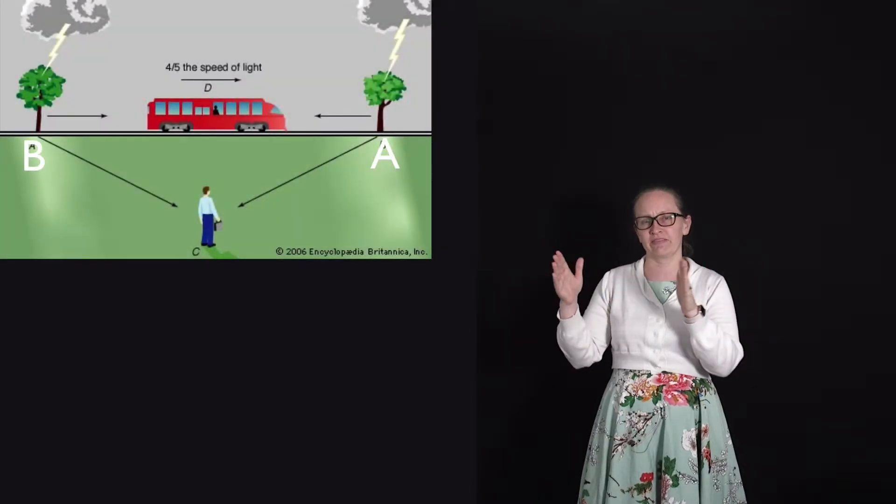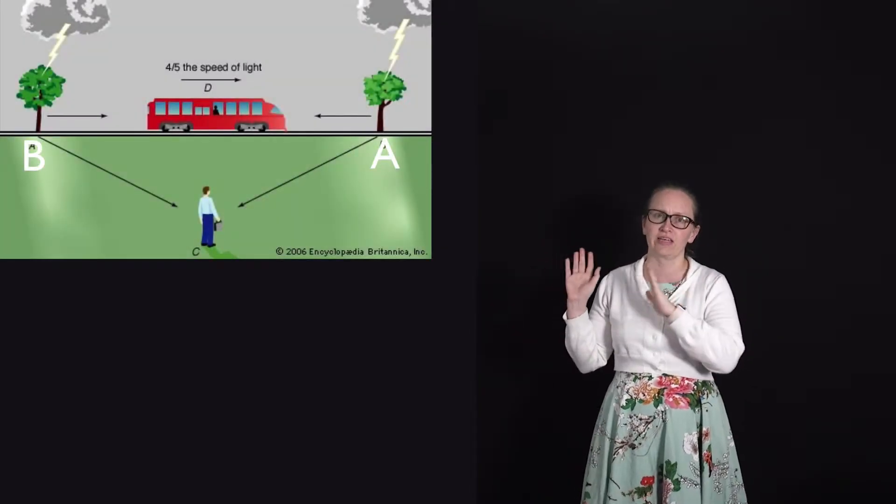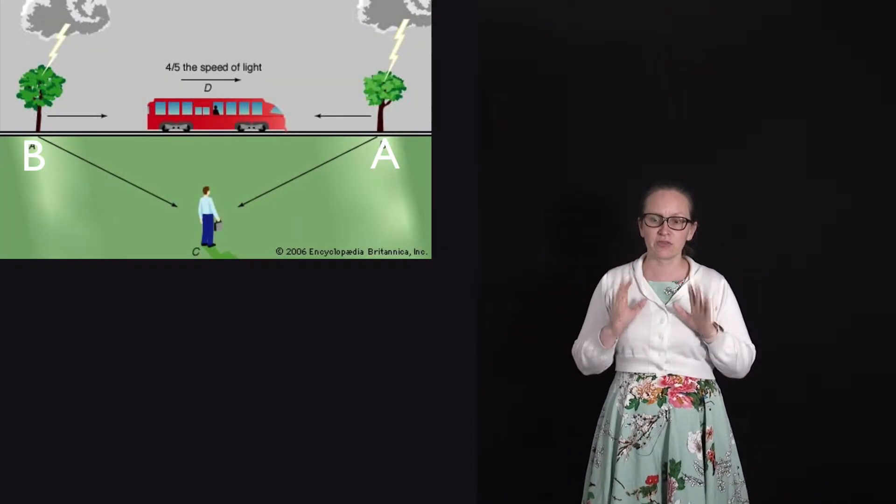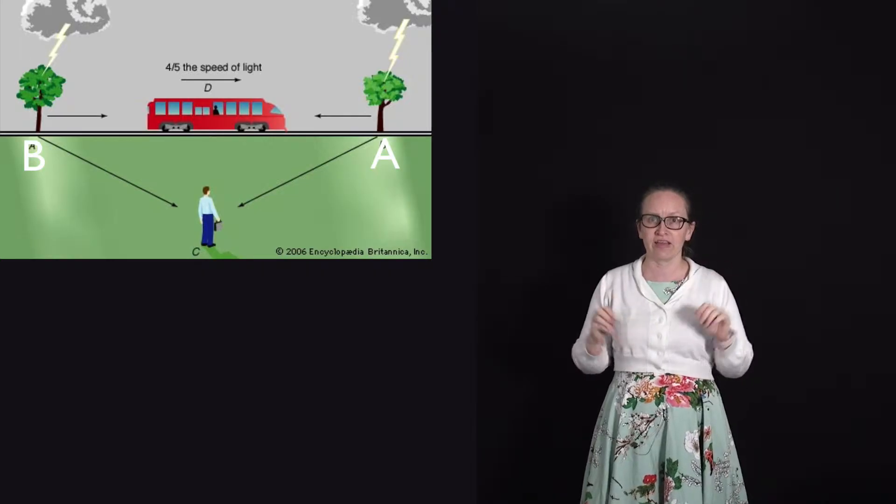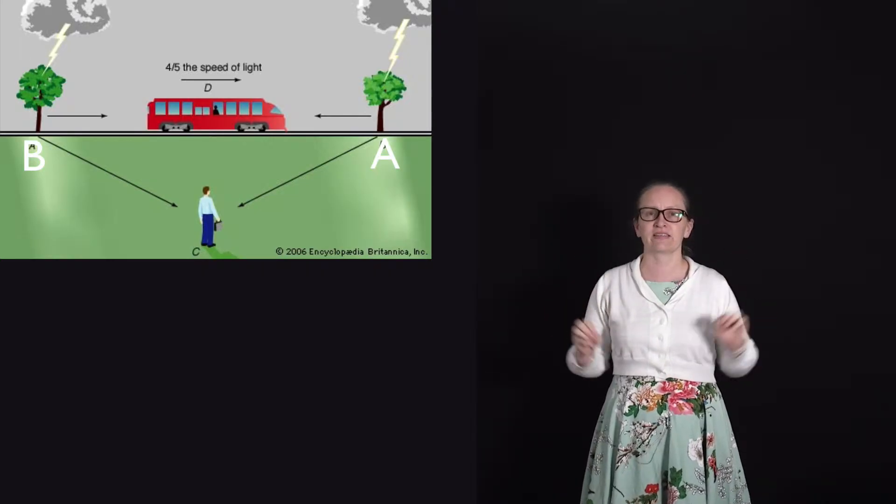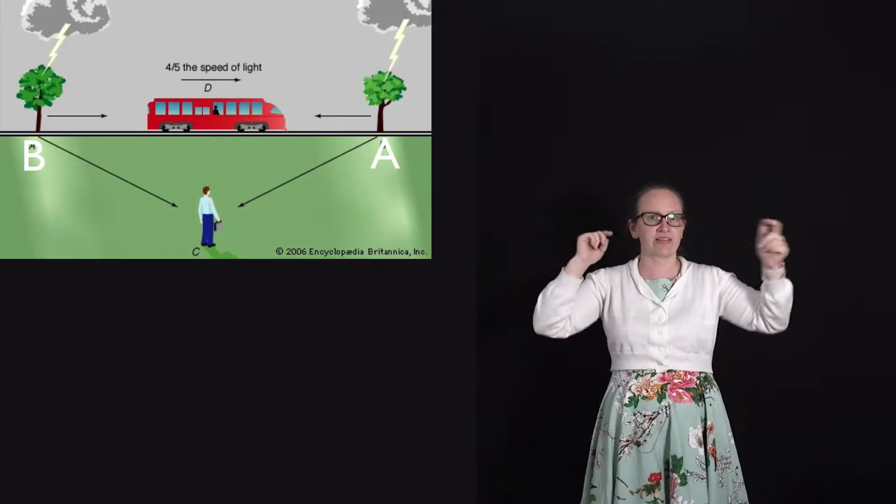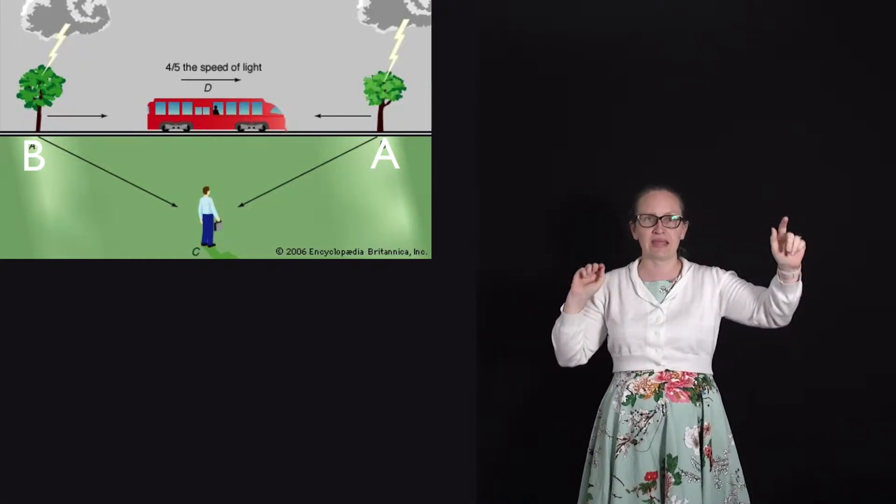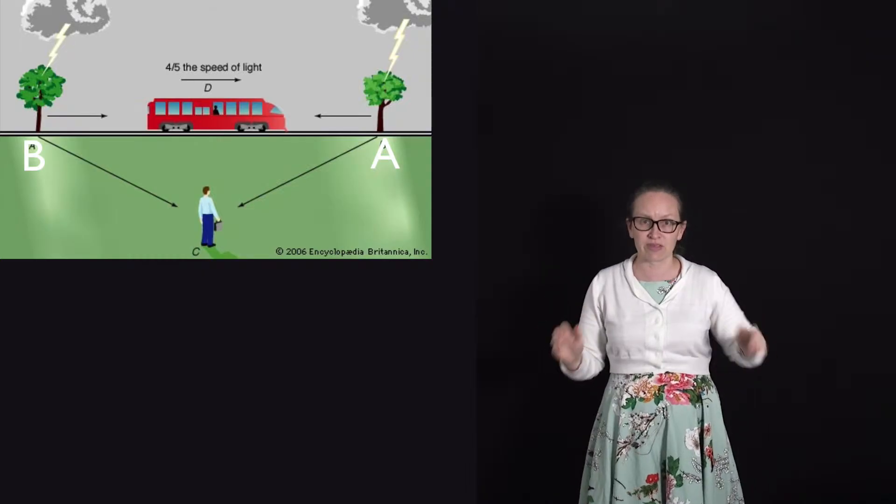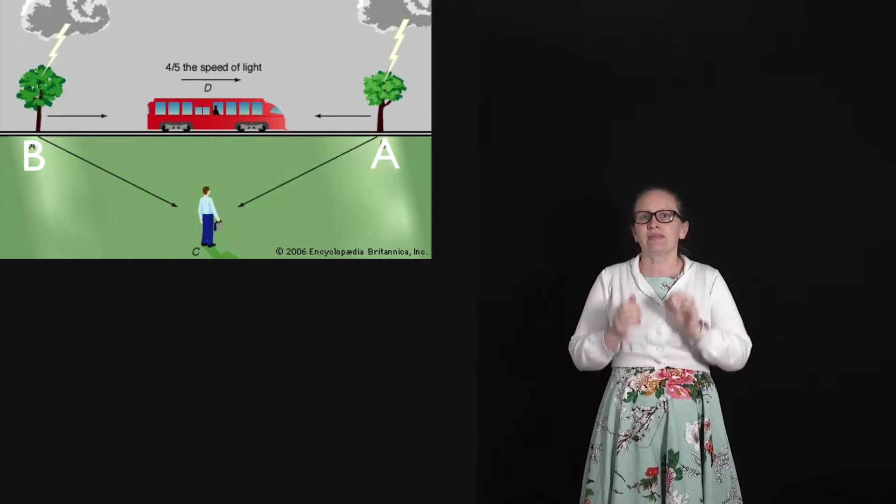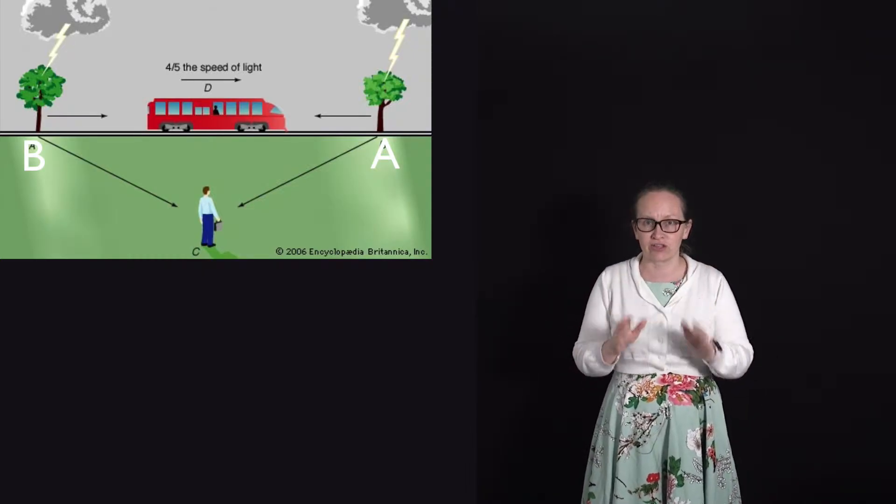He proposed considering a train carriage which was moving at relativistic speeds along its track. There's an observer outside the train. On a dark and stormy night, the observer sees two bolts of lightning hit either side of the train at A and B at exactly the same time. Meanwhile, there's a passenger inside the train.